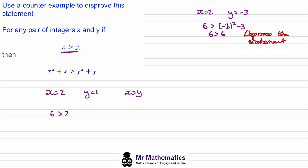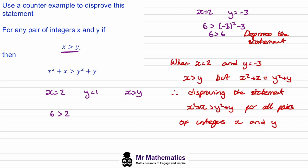As with any proof, we need a final written statement as our conclusion. We say: when x equals 2 and y equals negative 3, x is greater than y, but x squared plus x equals y squared plus y, therefore disproving the statement that x squared plus x is greater than y squared plus y for all pairs of integers x and y.